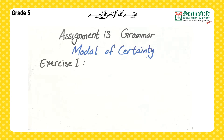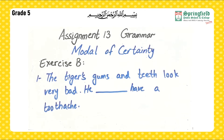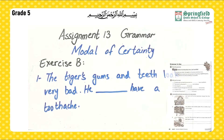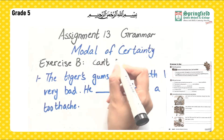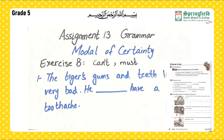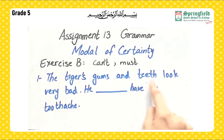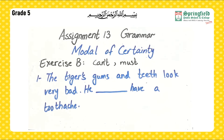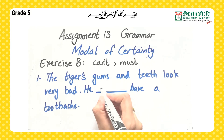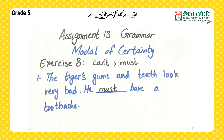Grammar in Use — Exercise B: Fill in the blanks with 'can't' or 'must.' First one: 'The tiger's gums and teeth look very bad. He ___ have a toothache.' They look bad so he is in pain — the answer is 'must': 'He must have a toothache.'